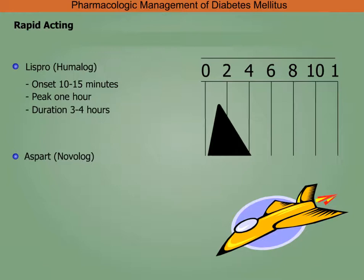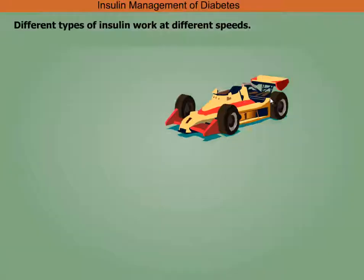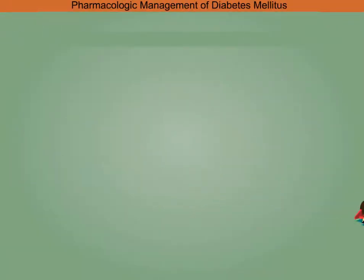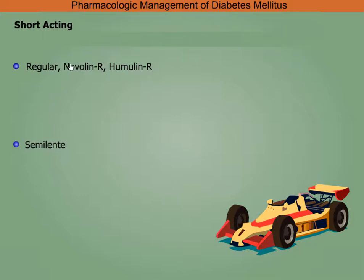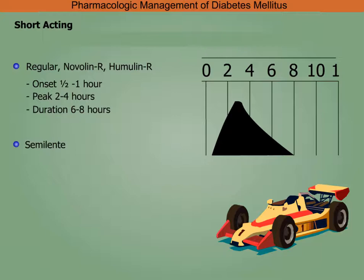Aspart has an onset in 10 to 15 minutes, peaks in 40 to 50 minutes, with a duration of four to six hours. Short-acting Regular (Novolin R and Humulin R) has an onset in one-half to one hour, peaks in two to four hours, with a duration of six to eight hours.